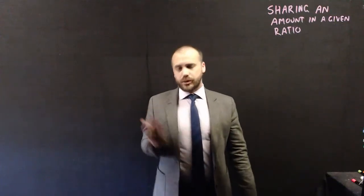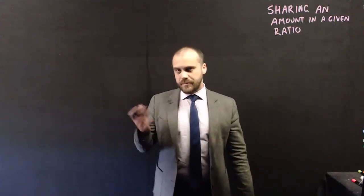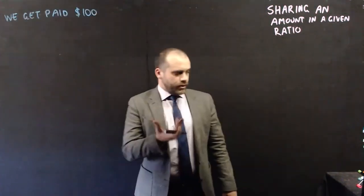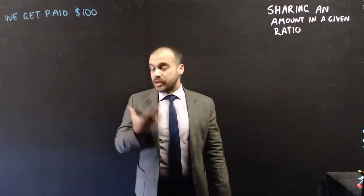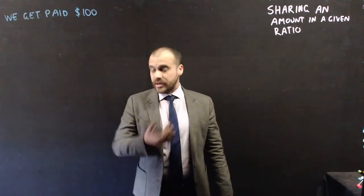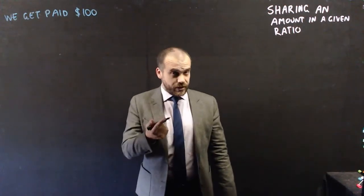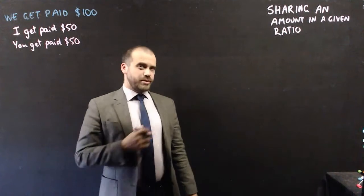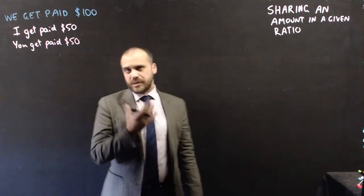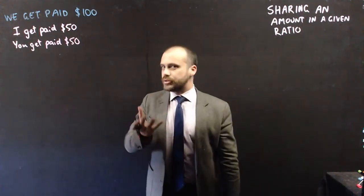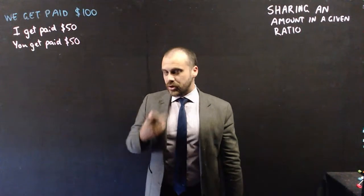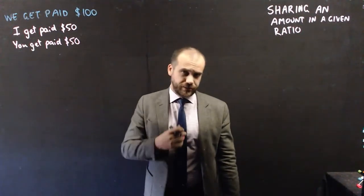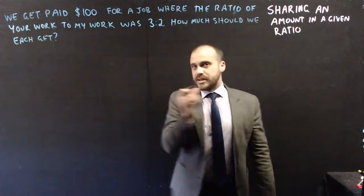Let's say you and I did a job together and somebody paid us $100 to do that job. Now if we contributed evenly, it would make sense that we each get $50. But what if we didn't contribute evenly — what if you did a lot more work than I did? We can use ratios to share this money more fairly.